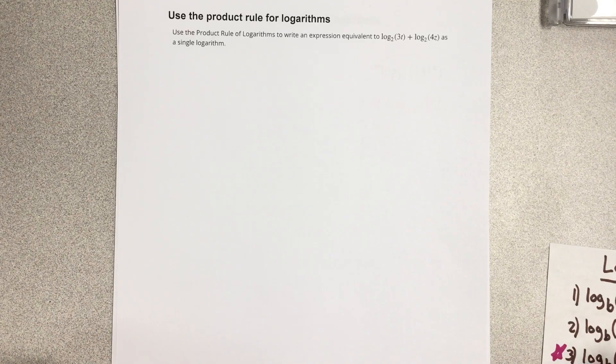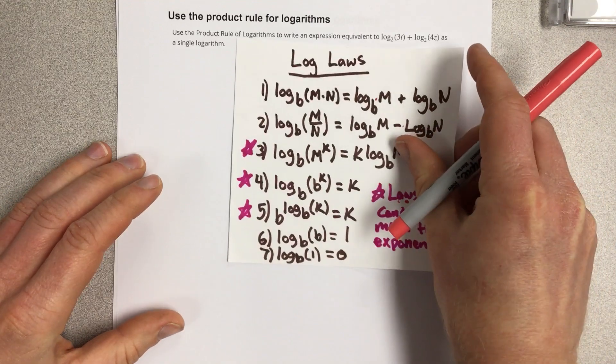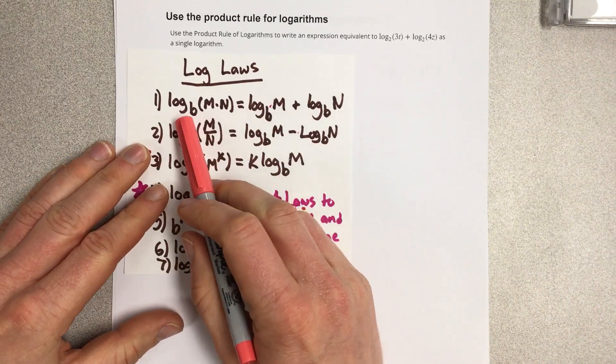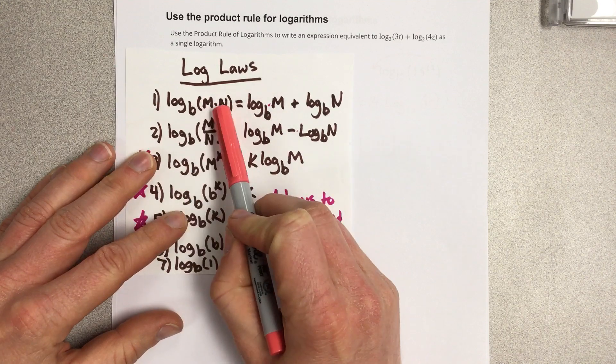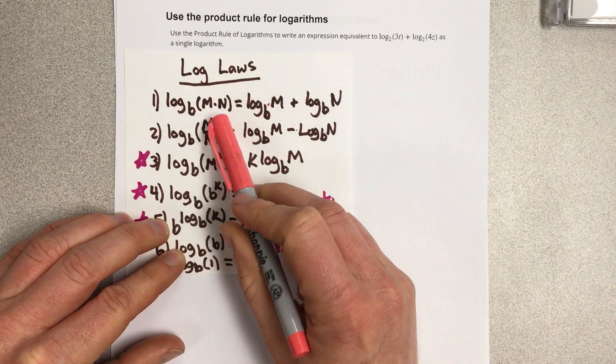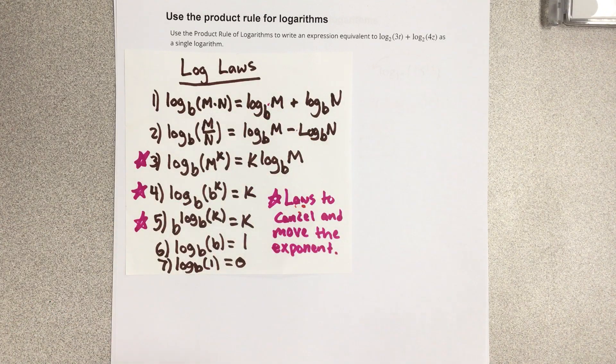In this video we're going to use the product rule for logarithms. The product rule for logarithms states that if you have a logarithm with multiplication on the inside of the input of the logarithm, then you can split that between two logarithms with the same base and they would be added.